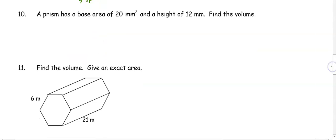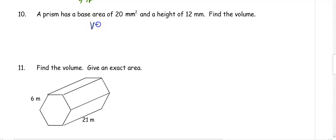In number ten, a prism has a base area of 20 millimeters squared and a height of 12 millimeters. Find the volume. The volume is just base area times height, so 20 times 12 gives us 240 millimeters cubed.